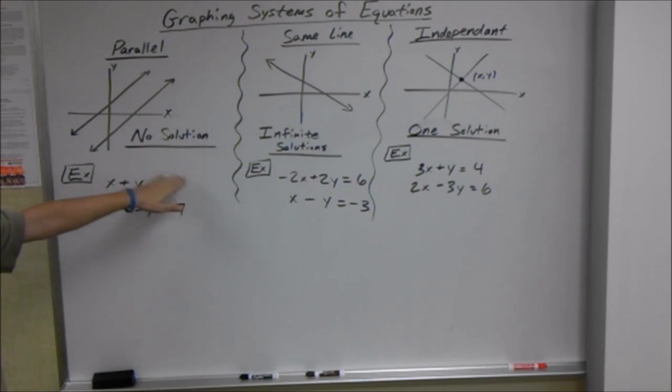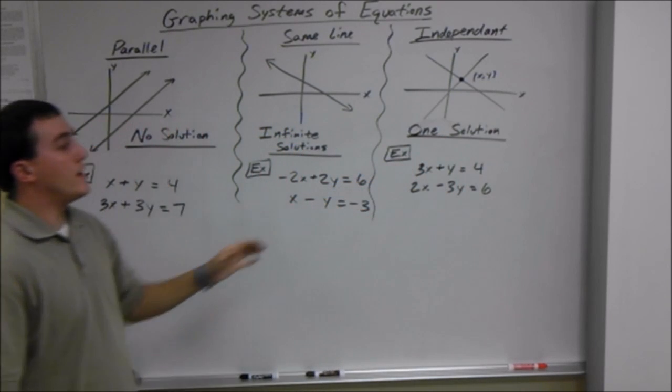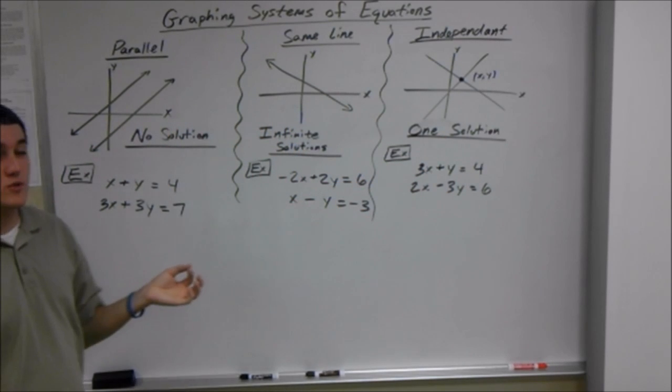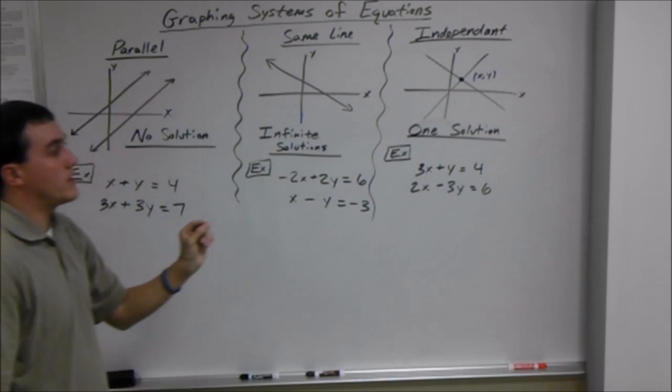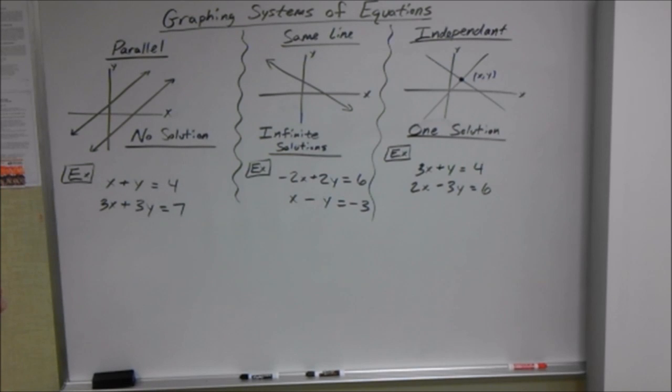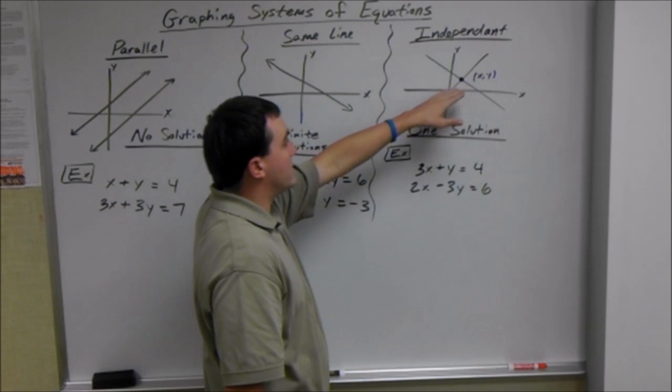You can get no solution, infinite solutions, or a single solution. Now you get a single solution and that's pretty much what we're looking for is where these lines hit or where they meet, the point where they meet. So if they hit at a single point that's called an independent solution.